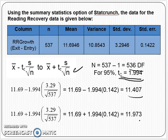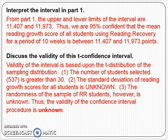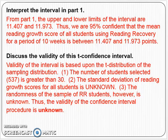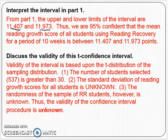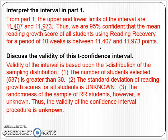That's the growth in MAP score from when they started the program to when they ended the program — about 11 and a half points of growth on average for all students. We interpret the interval as we do with all confidence intervals: we are 95% confident that the mean reading growth score of all students in the district that use Reading Recovery — not just this year but next year and the year after — for this period of 10 weeks, is between 11.407 and 11.973 points.